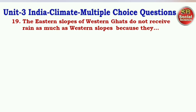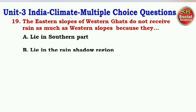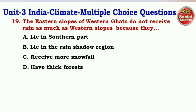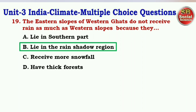Next question: The eastern slopes of the Western Ghats do not receive as much rain as the western slopes because they — options are lie in the southern part, lie in the rain shadow region, receive more snowfall, have thick forest. The right answer is option B — they lie in the rain shadow region.